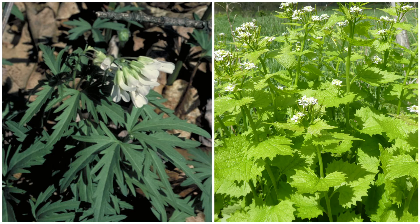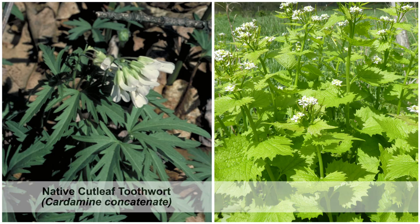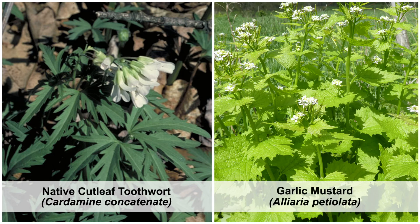There are many native members of the mustard family, such as cut leaf toothwort pictured here, that also have cross-shaped white flowers with four petals. Garlic mustard can be distinguished from native mustards by their leaf shape — native species have compound leaves, unlike garlic mustard, which has kidney or heart-shaped simple leaves. Garlic mustard spreads prolifically by seed and displaces native plant communities, so using these key characteristics to properly identify this aggressive invader is the first step in any invasive plant control program.